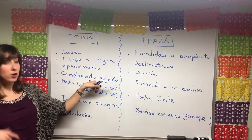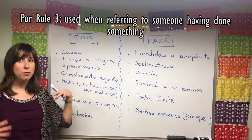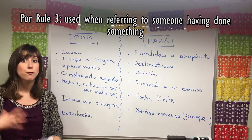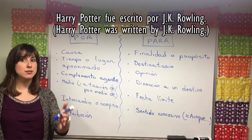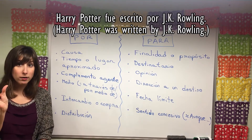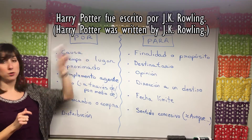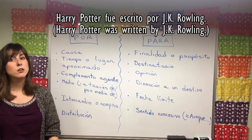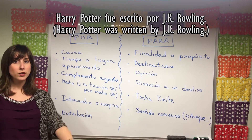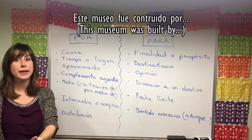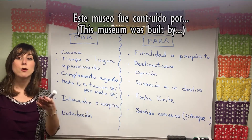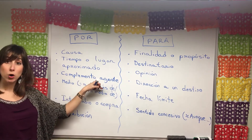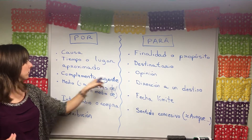We also use por with complementos agentes — that means who did an action. For example, 'Harry Potter fue escrito por J.K. Rowling' — Harry Potter was written by J.K. Rowling. The word 'by' in English becomes por in Spanish. Or 'Este museo fue construido por...' — this museum was built by whoever. So when indicating who performed an action, we use por.